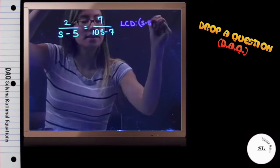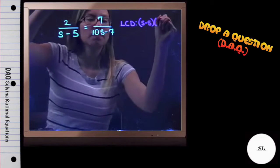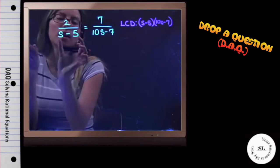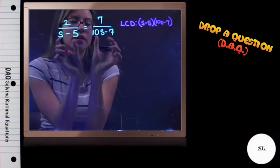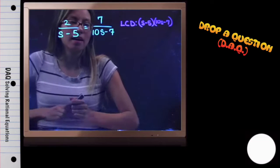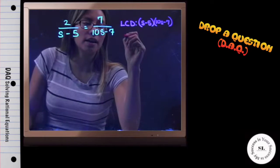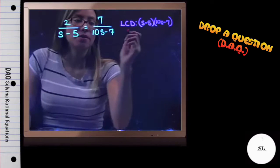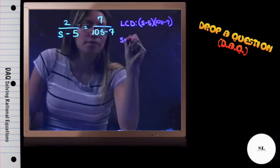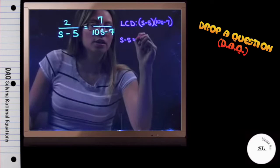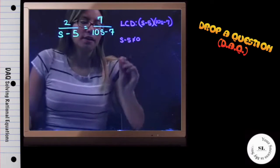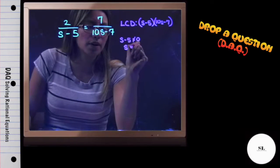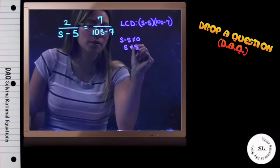Our LCD in this case will be one of each denominator. What we have here, we need to make sure that when solving it, our answers are viable. We cannot divide by 0, so if we set each denominator not equal to 0 and solve for my variable s, I need to add 5 to both sides, so I know that s cannot be equal to 5.